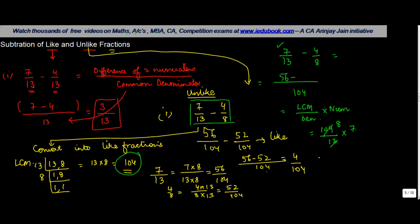Similarly, for 4 by 8, what we do is we divide the LCM by the denominator, which is 8, and multiply it by the numerator. So 104 as it gets divided by 8 will give you 13, 13 into 4 is 52. And you get 4 by 104.